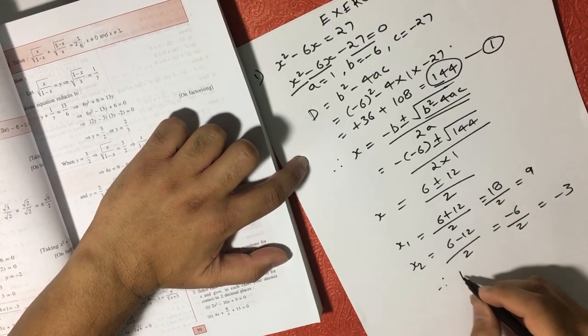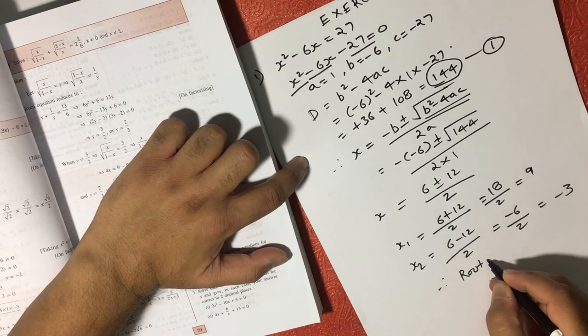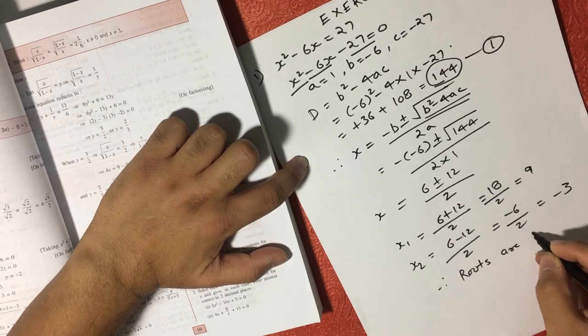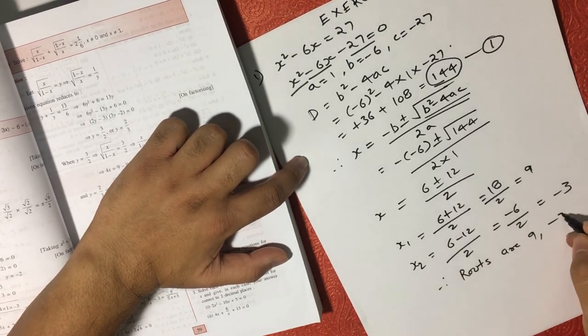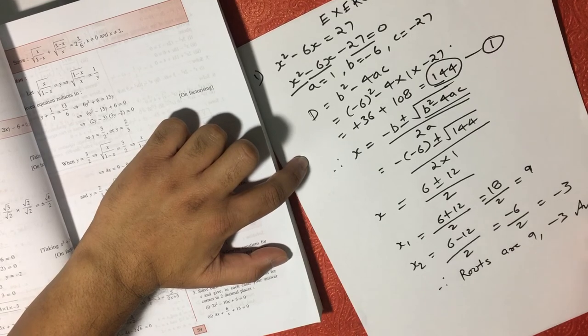Therefore, 2 roots are, 1 is 9 and 1 is minus 3, and that's your answer.